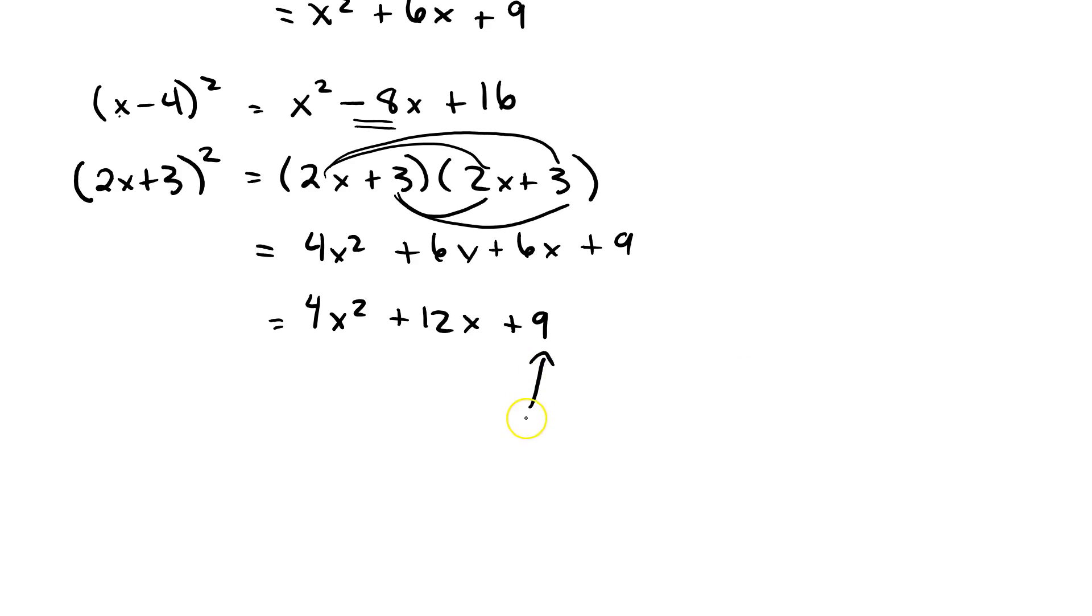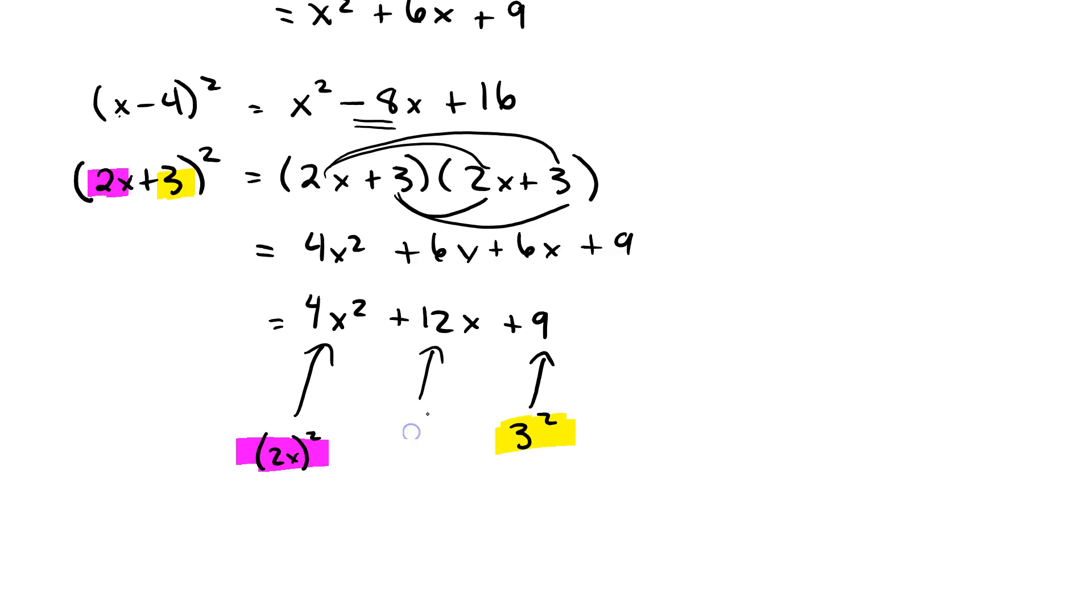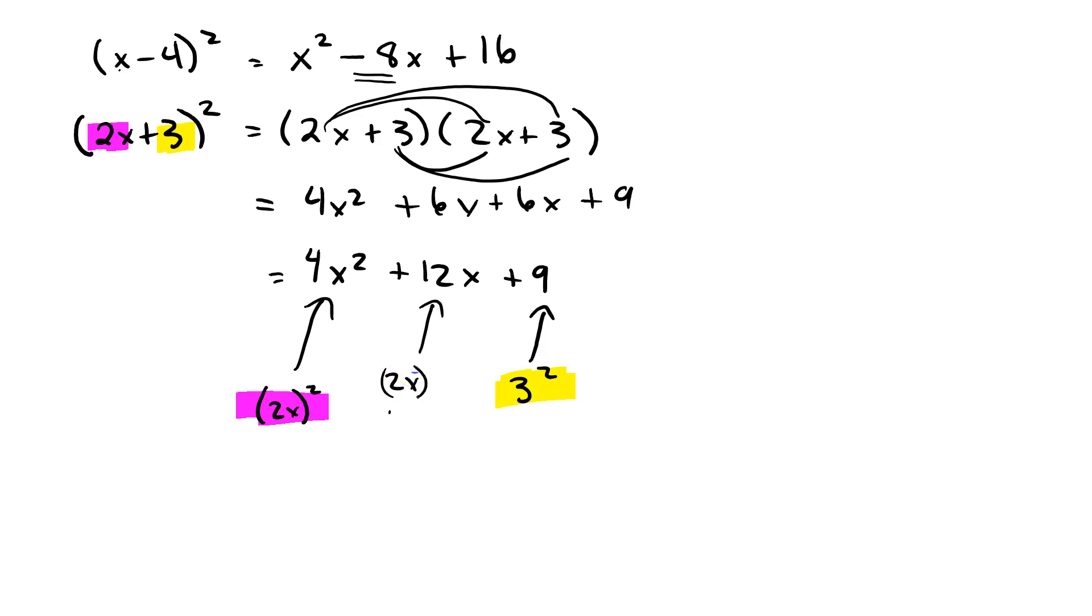The 9 here is 3 squared. Now let me just highlight. The 4x² comes from (2x)². The 12x comes from 2x times 3 times 2, which is just 12x. So I can go from this step to this step super quick.